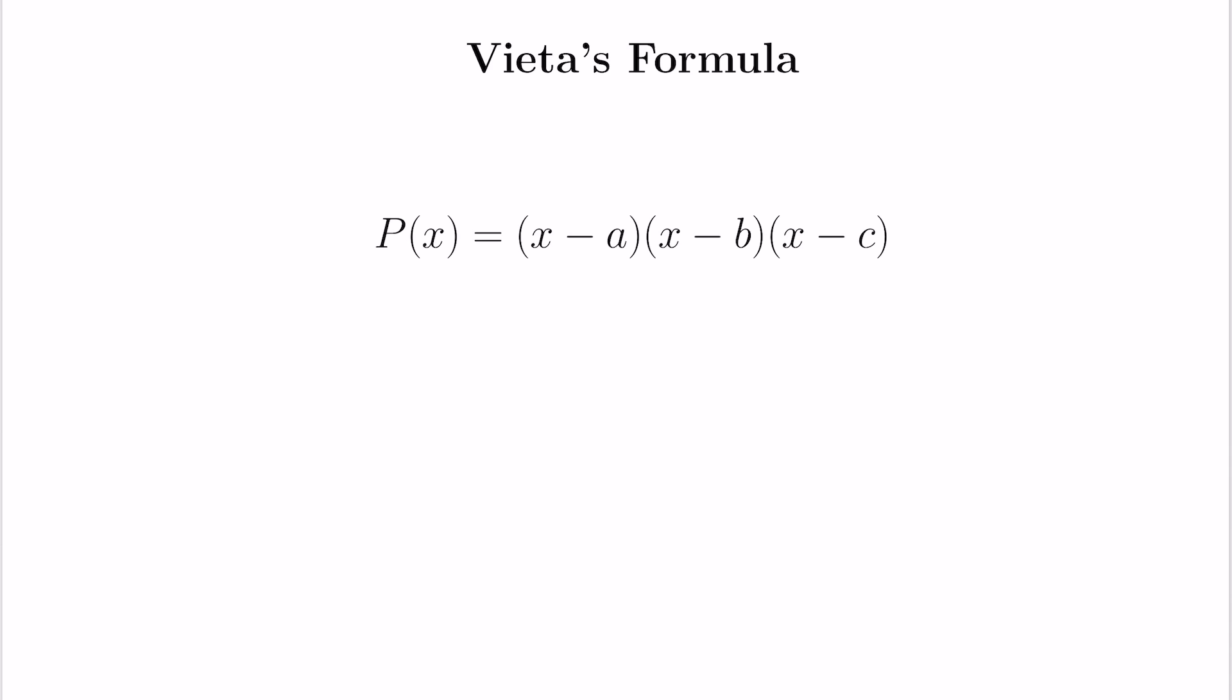Now one way we could expand is term by term but instead we're going to look at this collectively. We see that the x cubed term is obtained by selecting the x in every single one of these binomials and so we get x cubed.